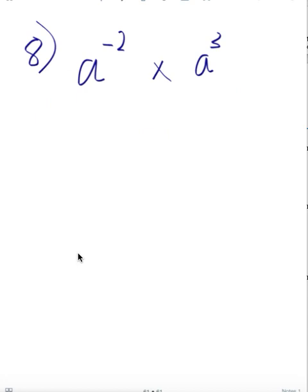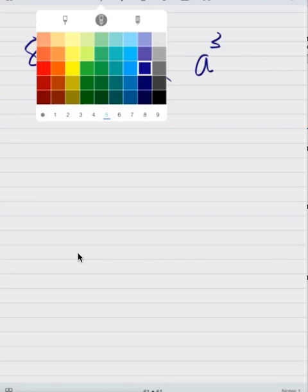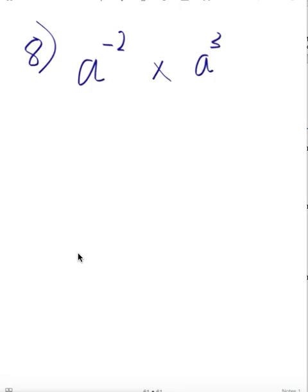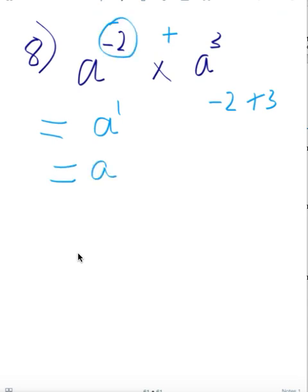This question has a negative power: a⁻² × a³. Don't panic — we still follow the same index law and add the powers of the same base. So −2 + 3 = 1, giving a power of 1. The final answer is just A. Whenever you see a negative power, just do the same thing: add the powers of the same base.